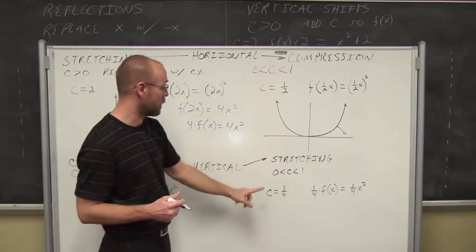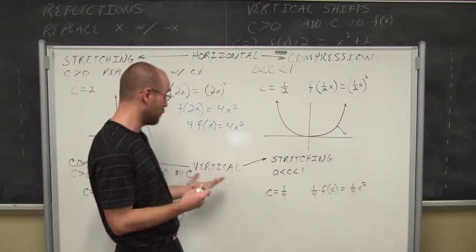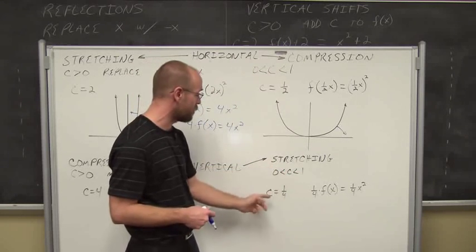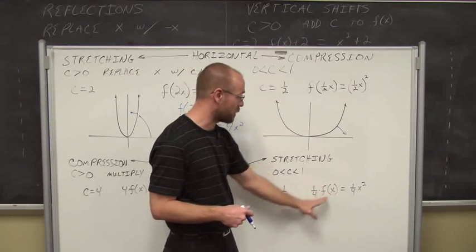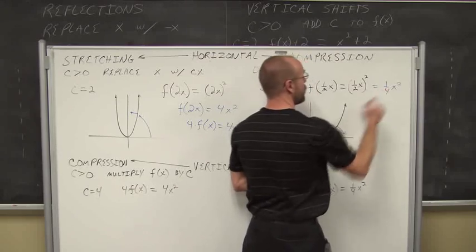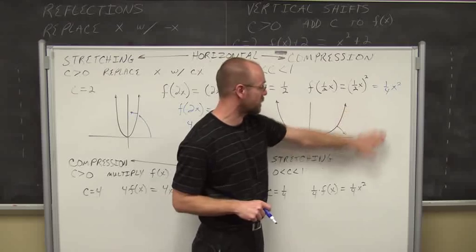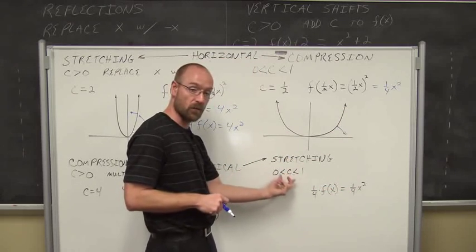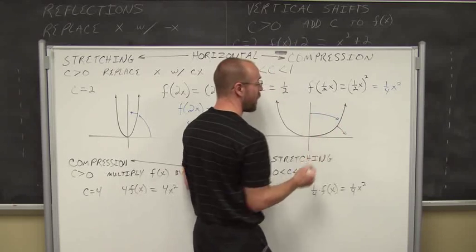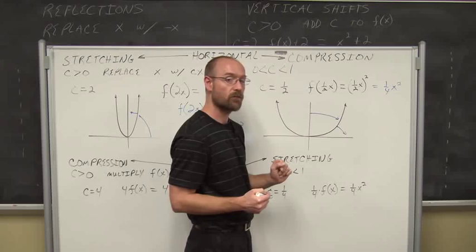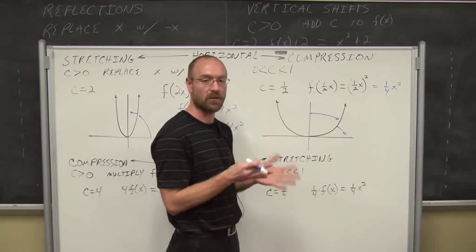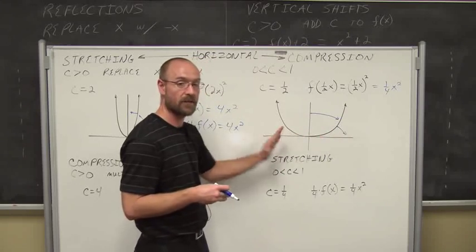We already did this one. If we're looking at a stretch relative to the vertical y-axis, and 0 is less than c is less than 1, let's let c equal 1 fourth. We're going to multiply the function by 1 fourth to get this. If I simplify, a half squared is 1 fourth x squared. So we just do a little simplification — we notice this is actually the same function. So if we multiply by a value less than 1 but greater than 0, we get a stretch in y. It's being stretched away from y but compressed towards x. Stretching and compressing are the exact same thing; it's just relative to which axis — horizontal or vertical.